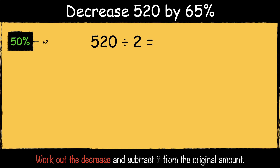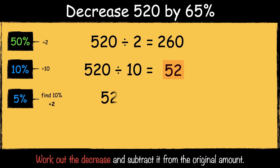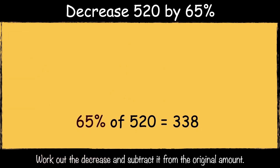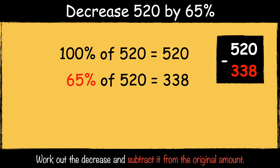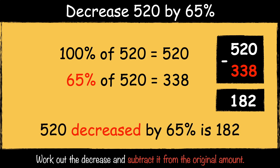Here's the next example: decrease 520 by 65%. To find 50% of the number we divide it by 2. 520 divided by 2 is 260. To find 10% of the number we divide it by 10. 520 divided by 10 is 52. Then if we divide the 10% answer by 2 we can find 5%. 52 divided by 2 is 26. So 65% of 520 is 338. 520 take away 338 is 182. So 520 decreased by 65% is 182.